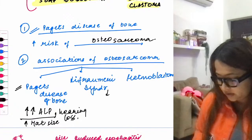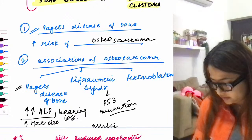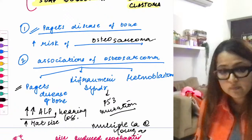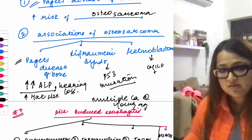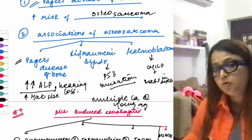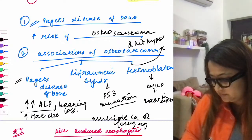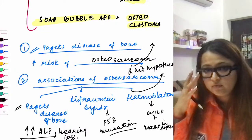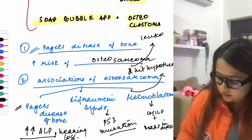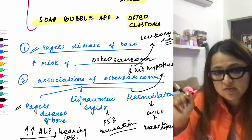In Li-Fraumeni syndrome, there are P53 mutations. P53 is a tumor suppressor gene, so mutations lead to multiple cancers at a young age. Regarding retinoblastoma: the patient presents with a mass in the eye, and an important concept is the two-hit hypothesis. Normally, light in the eye causes a red reflex, but in retinoblastoma patients you see a white reflex known as leukocoria.